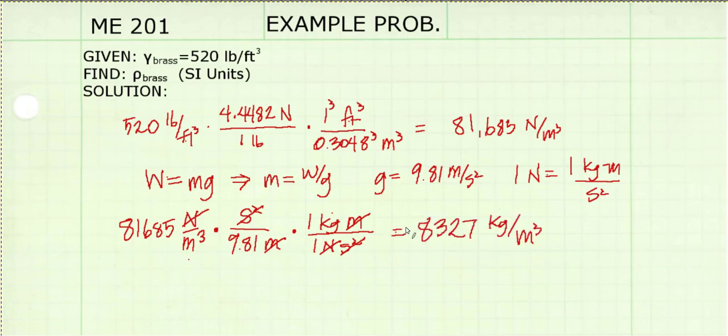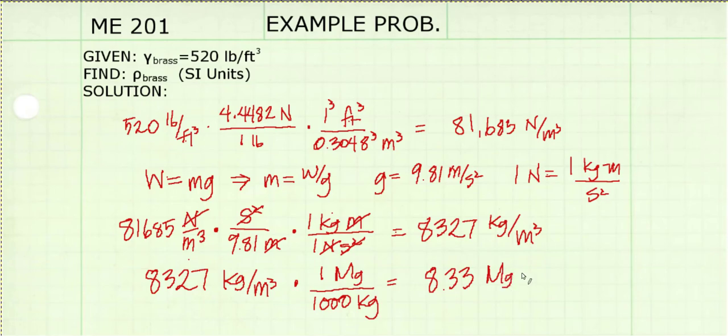There's just one more thing that we need to do. We want to get an answer that's between 1 and 1,000. If we recognize that 1 megagram is equal to 1,000 kilograms, then we can simplify our answer to 8.33 megagrams per cubic meter. And we're done.